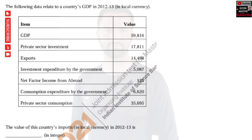What is the data given? We are given GDP, which we write as Y, equal to 59,816. Private sector investment is given — this is our I. Exports is given as 14,498 — this is our X. Investment expenditure by the government is given as 5,087 — this is our G.